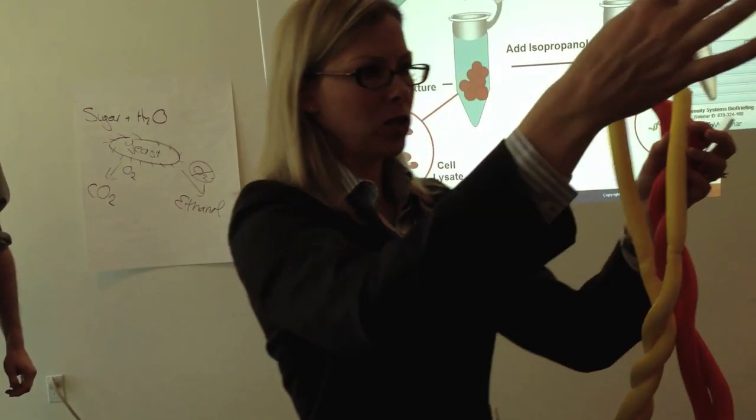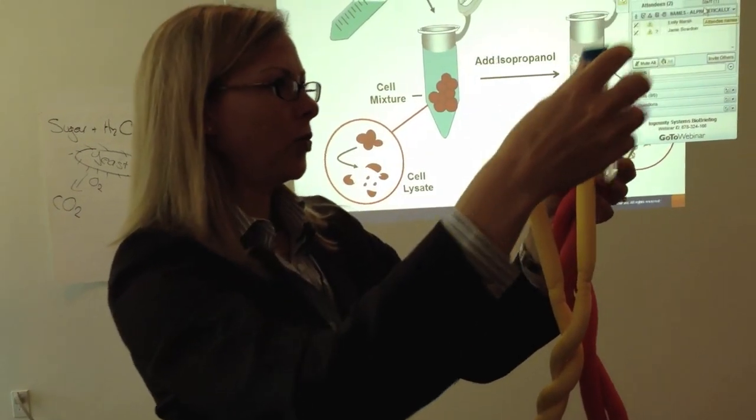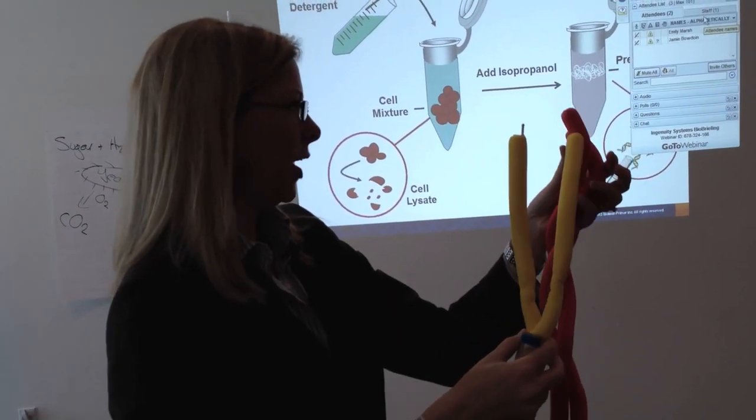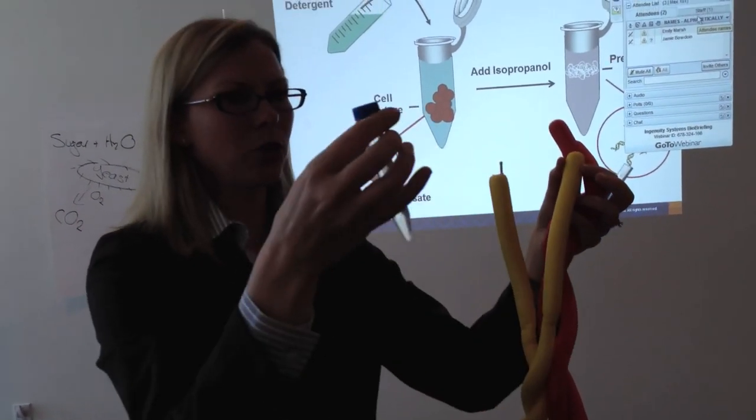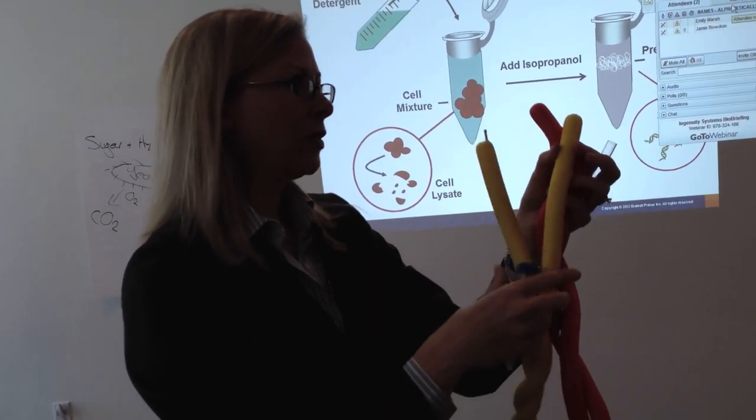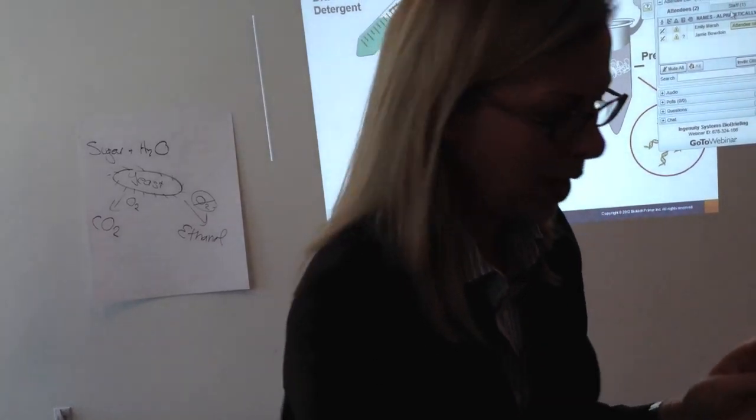So what we need to do next is add the isopropanol. When we add the isopropanol, the DNA, even though it's negatively charged and it doesn't really like being near other DNA, it likes being near isopropanol even less. So it would rather be near itself than the isopropanol, and that's what's going to cause it to precipitate.